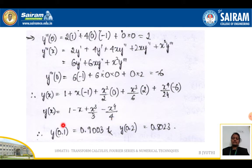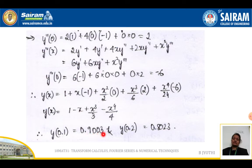Substituting into y(x): y(x) = 1 + x·(-1) + x²/2·0 + x³/6·2 + x⁴/24·(-6). On simplification, the x² term is 0, and simplifying the remaining terms gives y(x) = 1 - x + x³/3 - x⁴/4. Substituting x = 0.1 and x = 0.2 respectively gives y(0.1) ≈ 0.9003 and y(0.2) ≈ 0.8023.